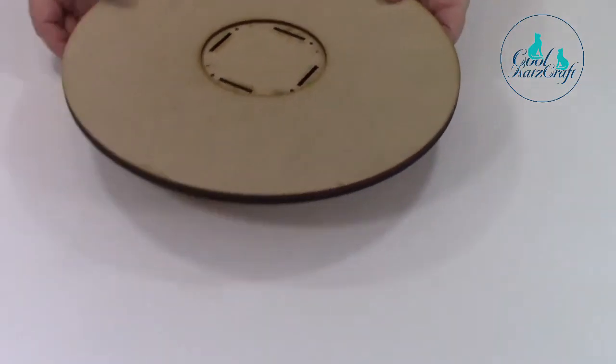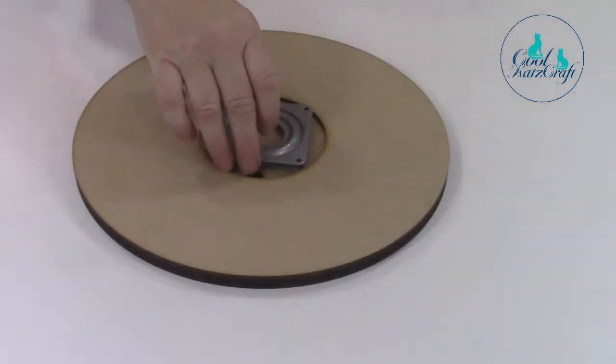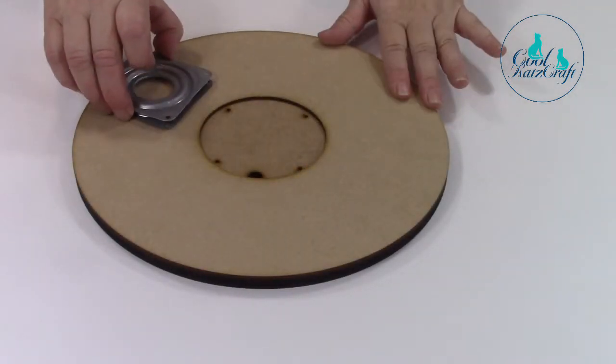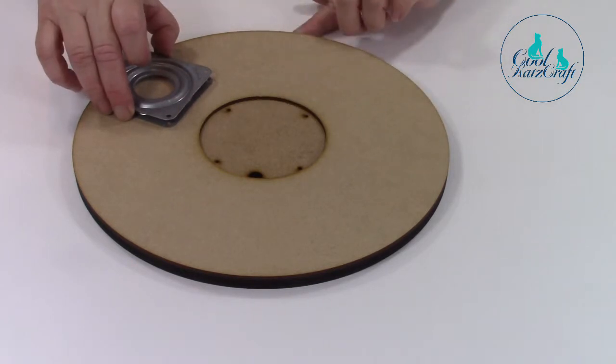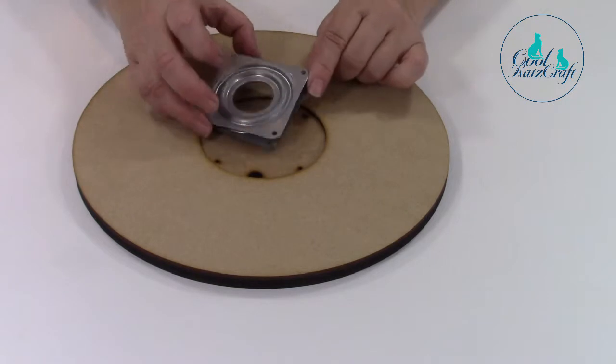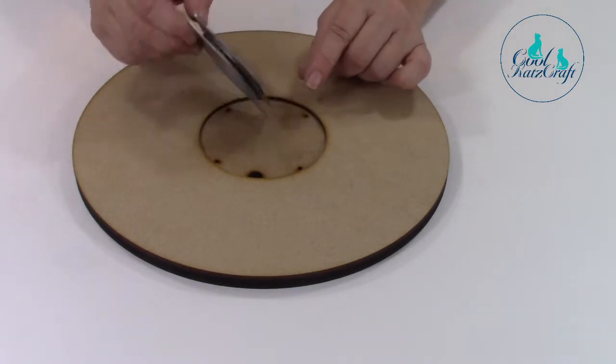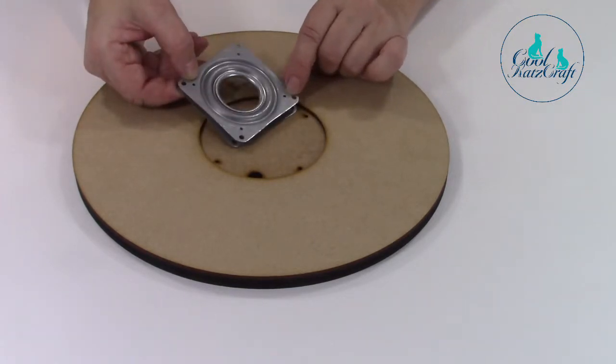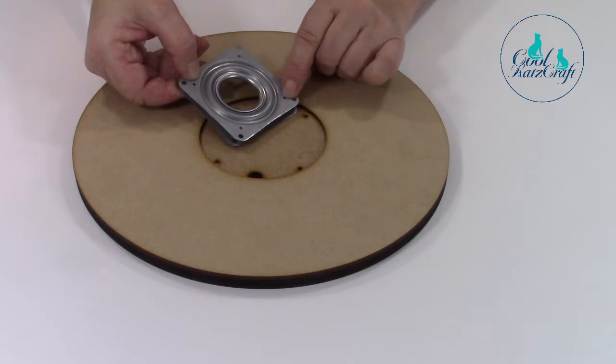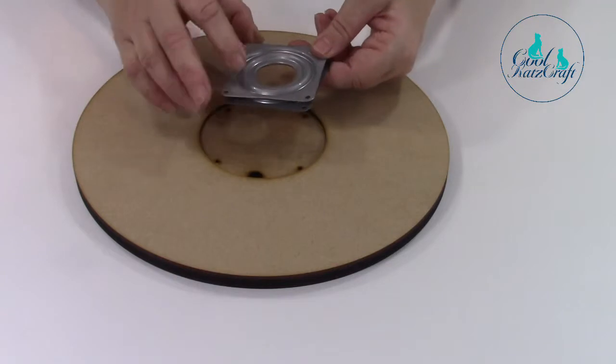That's all you need to do at the moment for the base to let it dry. Your next stage is to put in your Lazy Susan mechanism into the one with the deepest depth circle. You'll see with your Lazy Susan mechanism there's two sides and one has extra little holes on. We tend to put that one underneath.